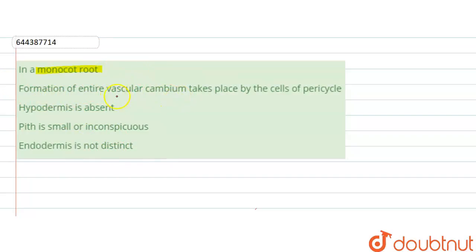Now, a vascular cambium in monocot roots consists of xylem and phloem, and both of these are radially arranged.